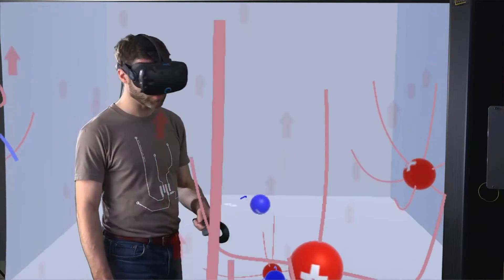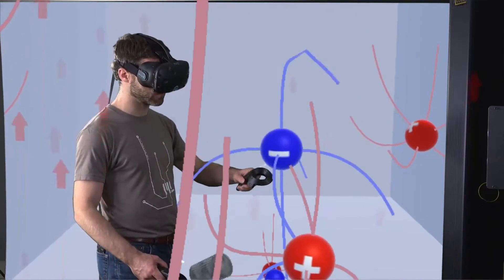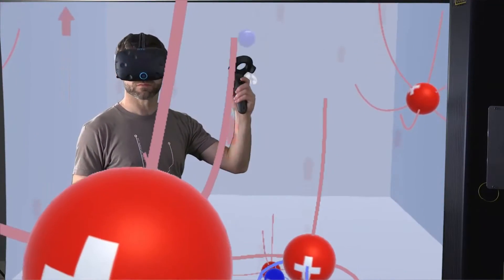Electrostatic Playground is a virtual reality sandbox where you can see and touch physics. You can use your hands and your body in 3D space to understand physical laws that are normally intangible and invisible.